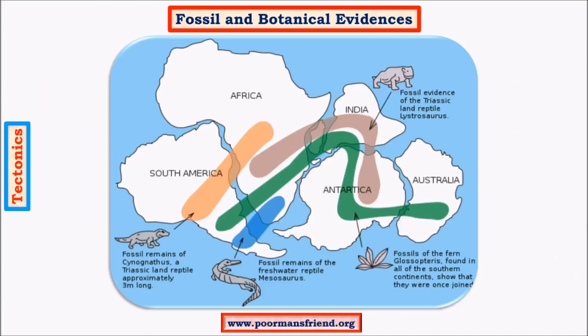Moving to fossil and botanical evidence, there are important fossils like Glossopteris and Lystrosaurus whose distribution supports continental drift.